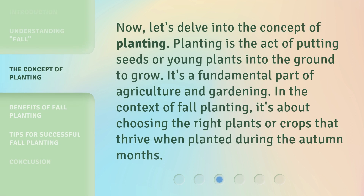Now let's delve into the concept of planting. Planting is the act of putting seeds or young plants into the ground to grow. It's a fundamental part of agriculture and gardening. In the context of fall planting, it's about choosing the right plants or crops that thrive when planted during the autumn months.